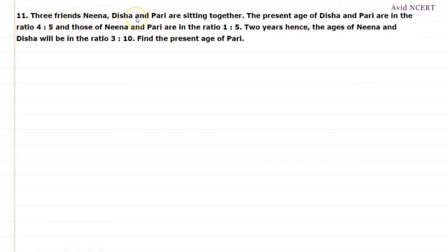Three friends Neena, Disha and Pari are sitting together. The present age of Disha and Pari are in the ratio 4 is to 5 and those of Neena and Pari are in the ratio 1 is to 5. Two years hence, the ages of Neena and Disha will be in the ratio 3 is to 10.